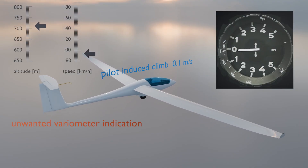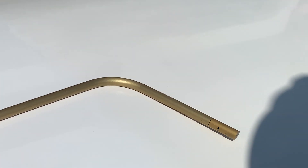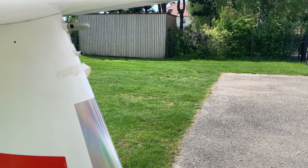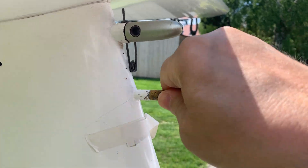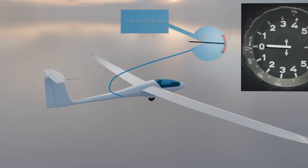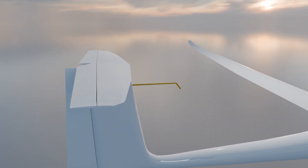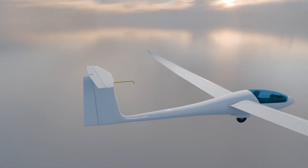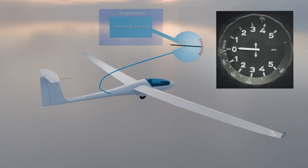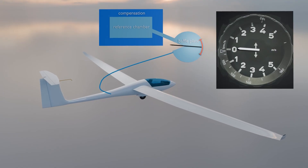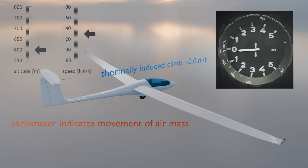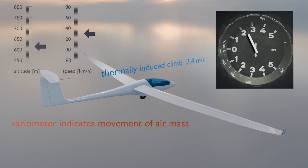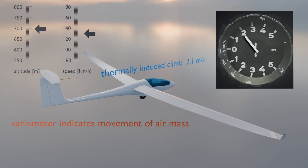To address this, compensated variometers are used, which are connected to a so-called TEK nozzle — a total energy compensation nozzle. This small probe is mounted in undisturbed airflow, often ahead of the tail fin. When airspeed decreases in a climb, suction from the probe decreases and offsets the pressure. In a descent, increasing airspeed increases suction. You're left with an indication of the movement of the air mass around you — which is exactly what we want. Modern instruments typically use electronic compensation to achieve the same effect.